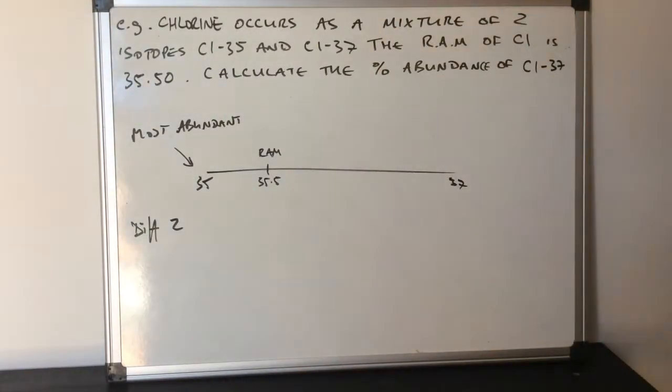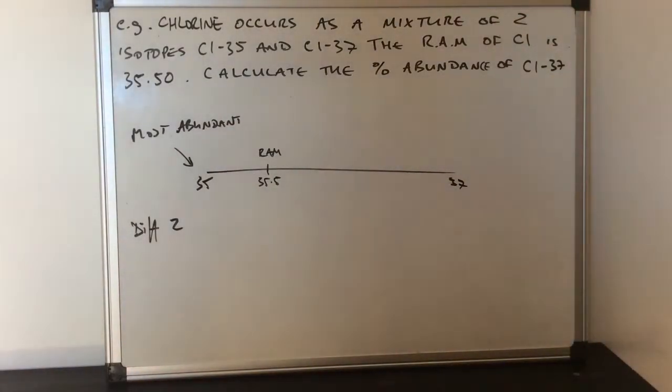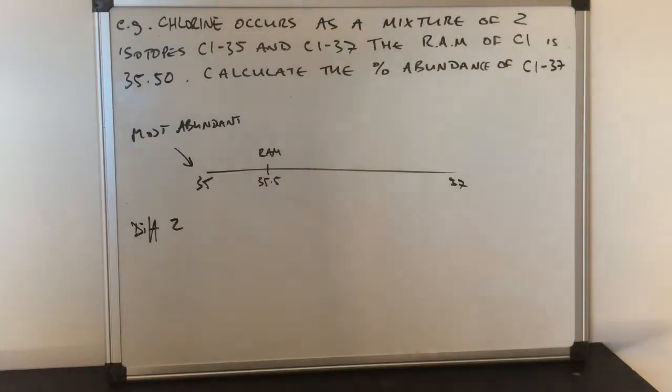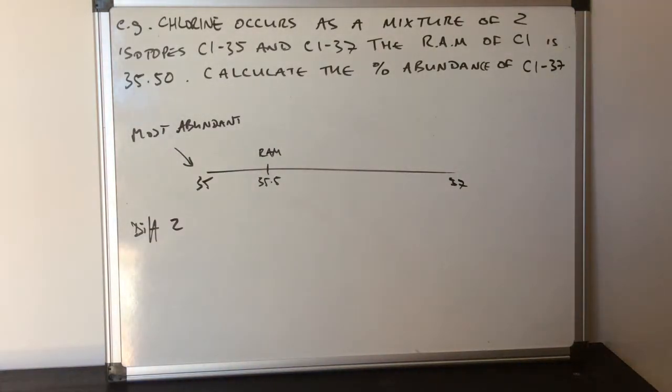Again I start with the number line and I've got my two isotopes on 35 and 37. This time we've got a difference of two. I'll put the relative atomic mass on the line so I can see which isotope it's sitting closest to, so we can establish which is the most abundant.